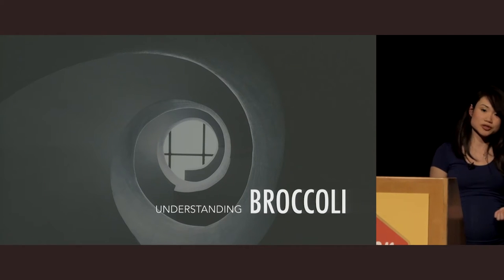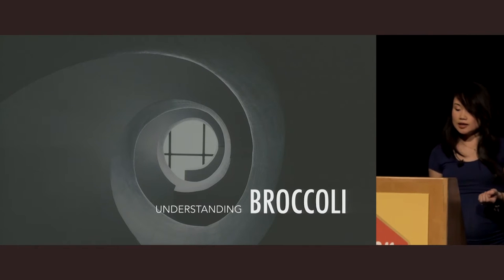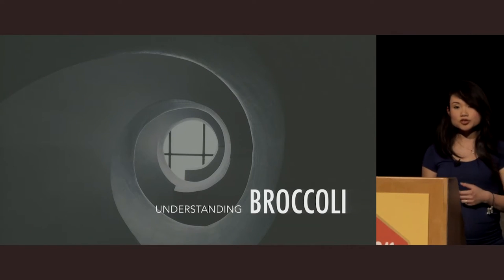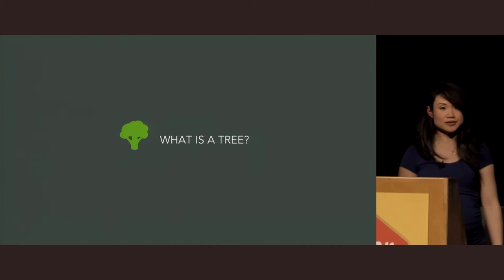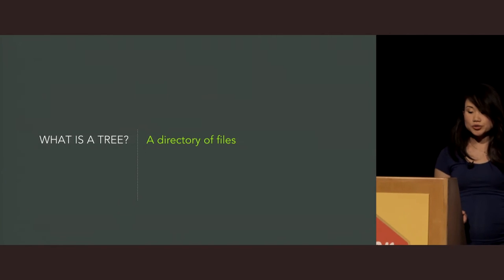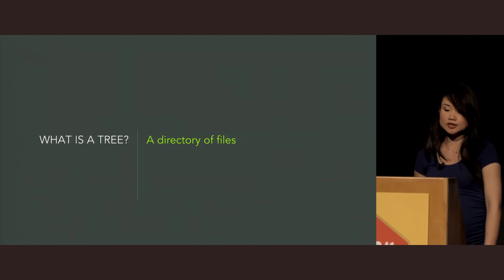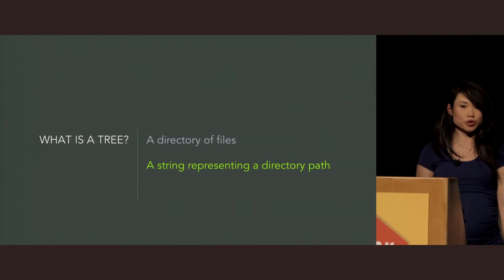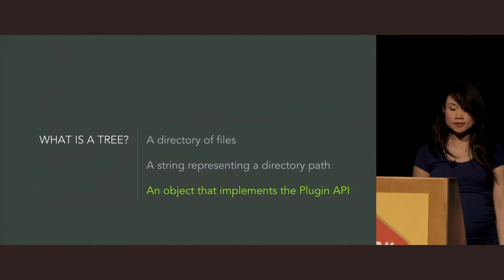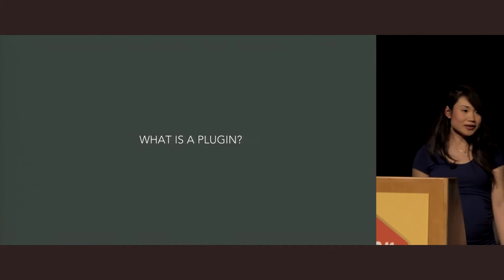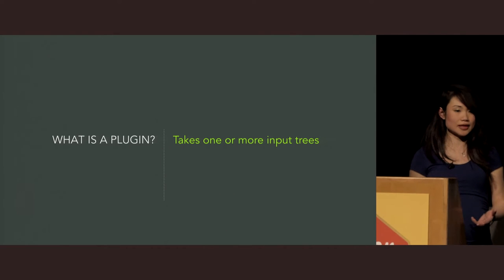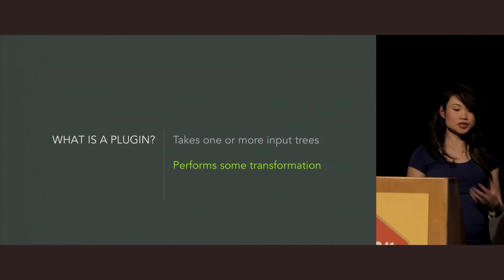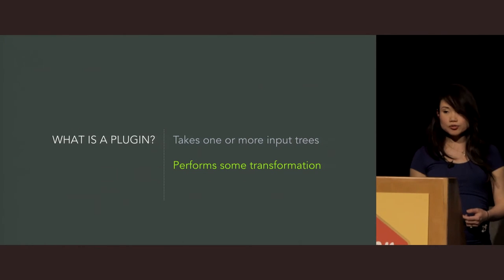Joe List introduced broccoli two years ago at the very first EmberConf. It's the library that is used inside of Ember CLI to manage the build pipeline, and it was built on a very simple primitive: a tree. So what is a tree? Back when broccoli was first introduced, a tree was presented as nothing more than a directory of files. You could define it as a string that represents the path to a given directory on the file system, or it could be an object that implements the plugin API. A plugin exports a function that takes one or more input trees, performs some transformation to the files those trees represent, and then returns an output tree.